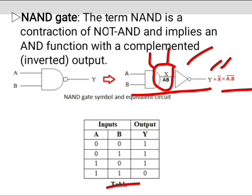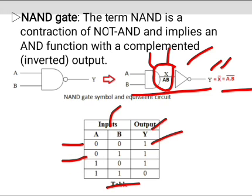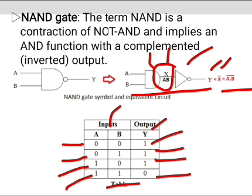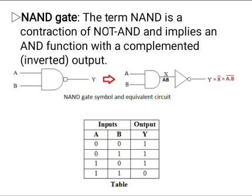Observe the truth table — A and B are the inputs, Y is the output. When both inputs are low, the output Y is high. When A is low and B is high, the output Y is high. When A is high and B is low, the output Y is high. When both inputs A and B equal 1, the output Y becomes low, that means 0. In general, for an N-input NAND gate, the output is high if any one of the inputs is low.